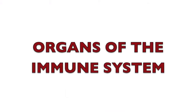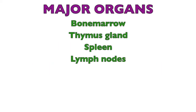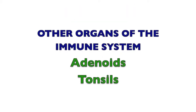The major organs of the immune system include bone marrow, thymus gland, spleen, and lymph nodes. Other organs of the immune system include adenoids and tonsils.